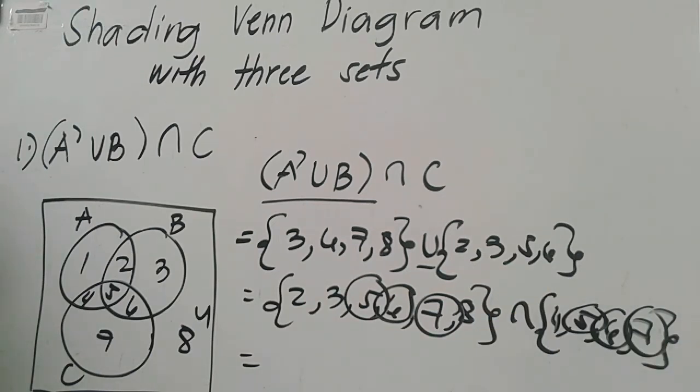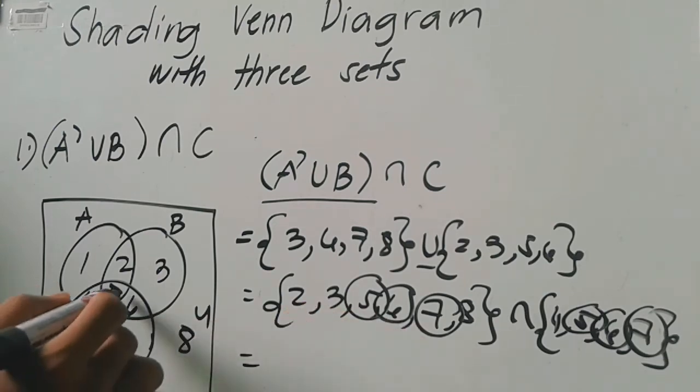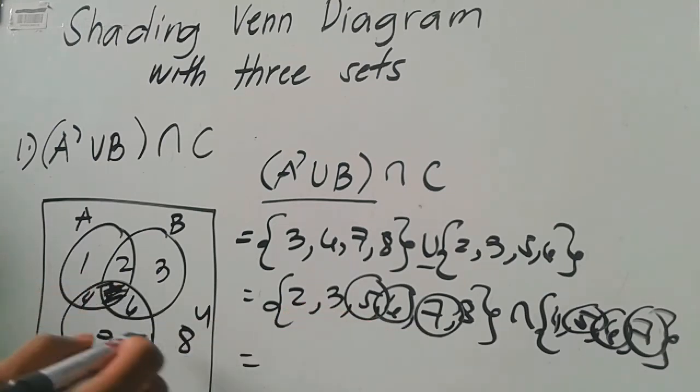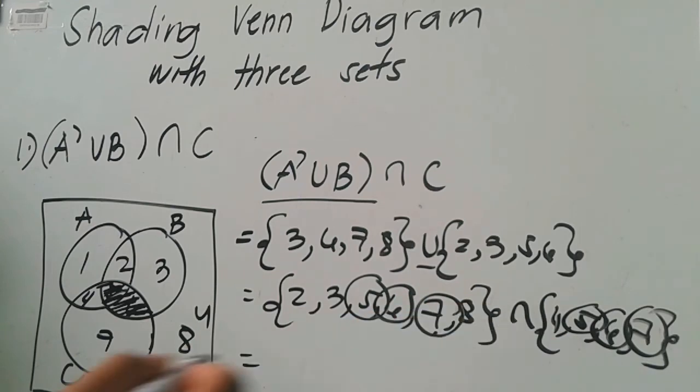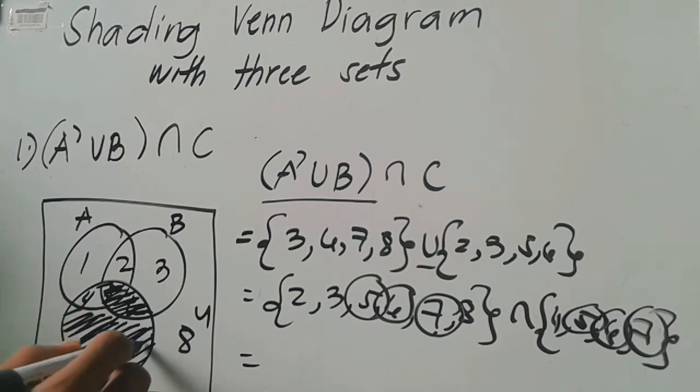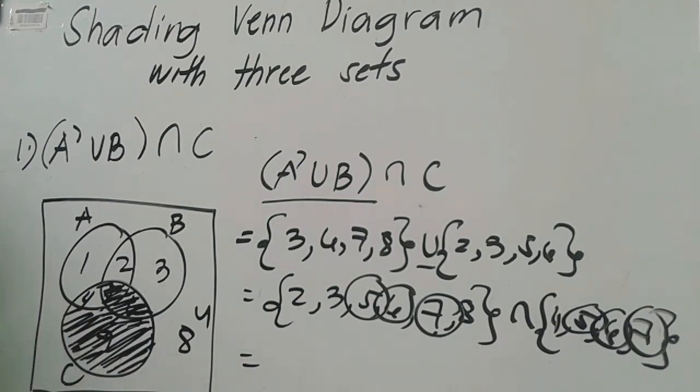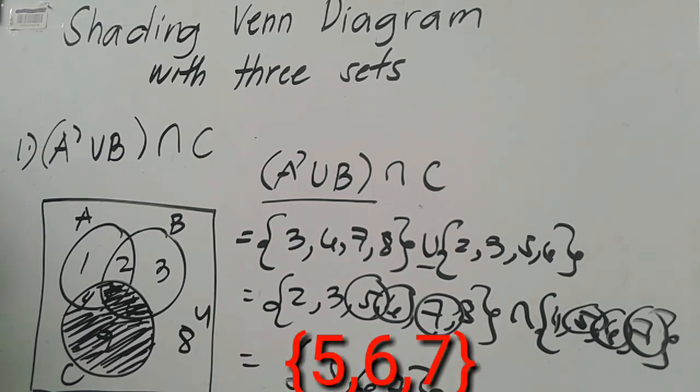Okay, so ibig sabihin yan yung i-shade natin, yan yung mga shaded region. So we have five, six, and then seven. So ito ngayon yung shaded region or yung sagot, yung shaded region ng diagram natin na quantity A complement union B intersection C. Five, six, seven, so ito yung shaded region.